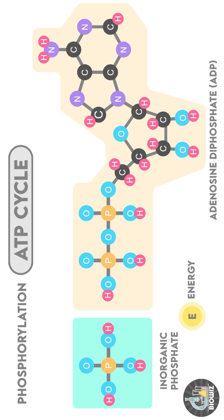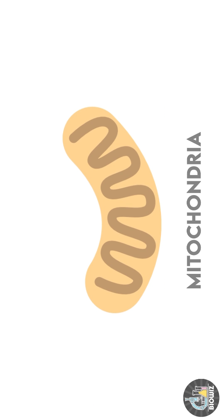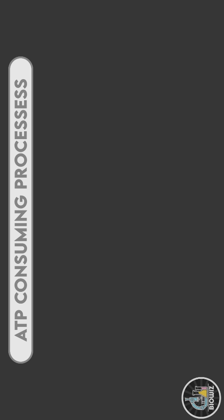A phosphate group is added to the ADP by phosphorylation reaction to convert it back to ATP. This reaction occurs in the mitochondria of eukaryotes during aerobic respiration.